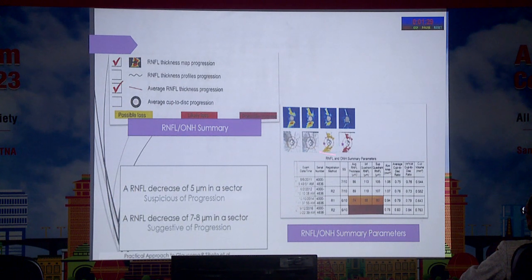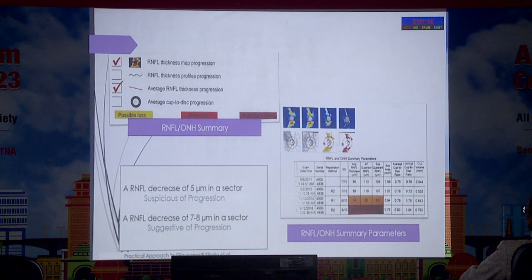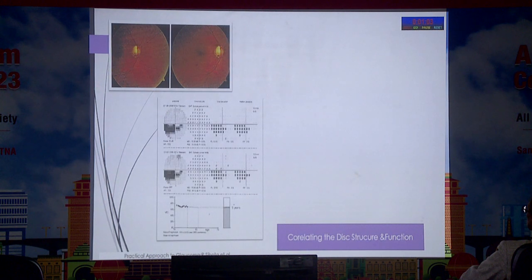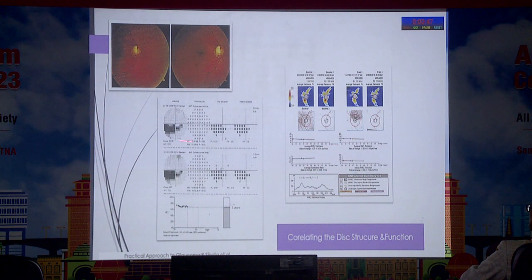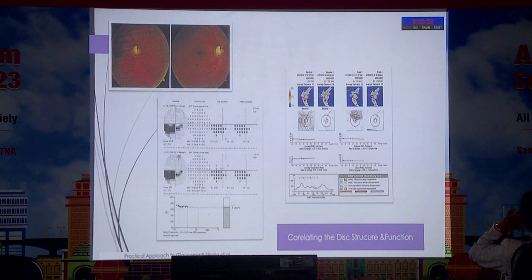There should be a numbering system — you can see that the numbers are going down from 80 to 65. Remember, an RNFL decrease of 5 microns is suspicious of progression and a decrease of 7 to 8 microns is suggestive of progression. Keeping this in mind and reviewing the picture, we can clearly see a patient is progressing, while keeping in mind other factors that may cause artifacts.